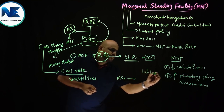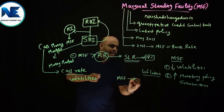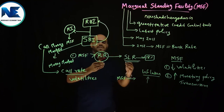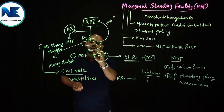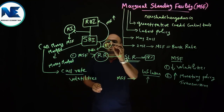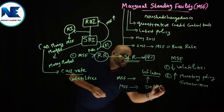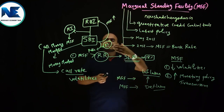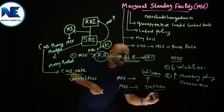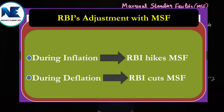The main aim of MSF is reducing volatility in overnight lending rates in the interbank or call market, and enabling smooth monetary transmission in the financial system. During the period of inflation, RBI will increase the MSF rate, which reduces the supply of money — this is a dear money policy or contractionary monetary policy. Similarly, during deflation, RBI will cut or reduce the MSF rate as part of a monetary stimulus. During inflation, RBI hikes MSF rate; during deflation, RBI cuts or reduces MSF rate.